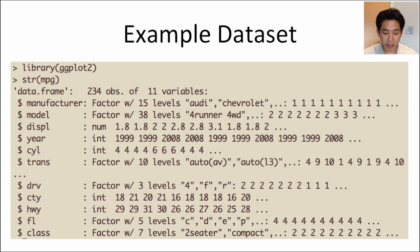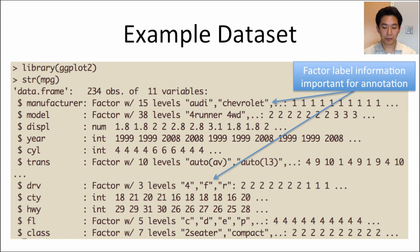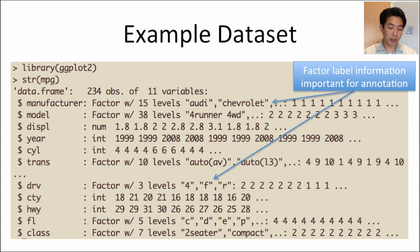The MPG dataset has 234 observations — 234 different types of cars — and 11 variables. I'm going to look at the displacement variable (DISPL), which indicates how large the engine is; the highway mileage (HWY); and the DRV variable, which indicates what kind of drive it is — four-wheel drive, front-wheel drive, or rear-wheel drive. Notice how the factors are labeled appropriately: the manufacturer variable is labeled by the manufacturer name such as Audi or Chevrolet, and the DRV variable uses '4' for four-wheel drive, 'F' for front-wheel, and 'R' for rear-wheel.